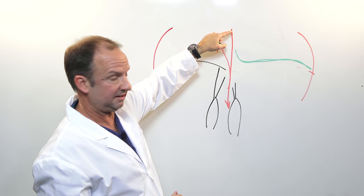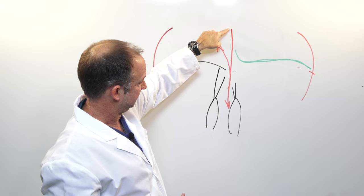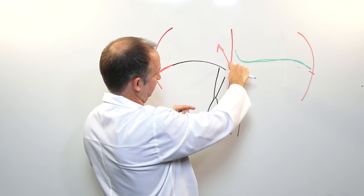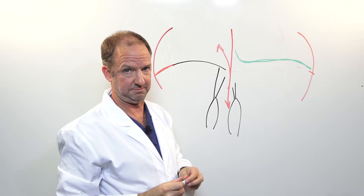Again, for the same mechanism, the blood doesn't move only in this direction. It starts regurgitating back because the tip of this leaflet is not kissing the other tip of the leaflet.